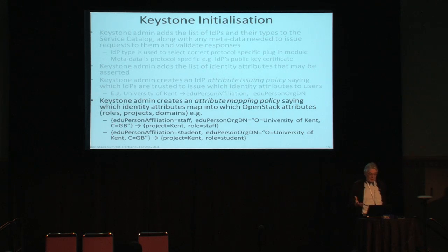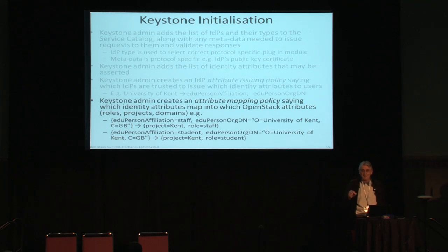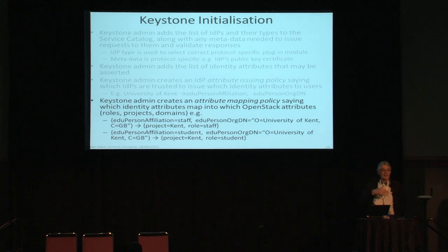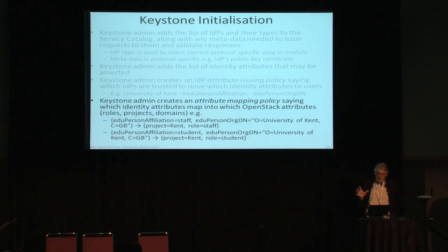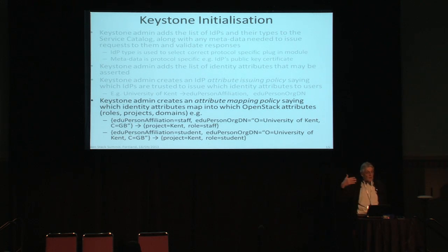An example of the attribute mapping: these are eduperson attributes used in real academic federations worldwide. If a user comes in with eduperson affiliation of 'staff' and eduperson DN of 'O=University of Kent, Country=GB', they get mapped to project 'Kent' with role 'staff'. If affiliation is 'student', they map to project 'Kent' with role 'student'. This determines which services they have access to.